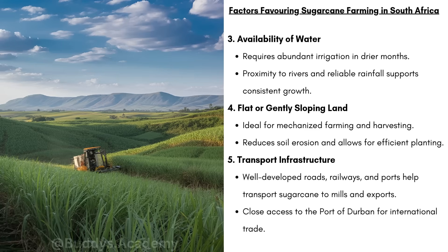We then have transport infrastructure. Well-developed roads, railways and ports help transport sugarcane to mills and for export. Sugarcane is very bulky and needs to be processed quickly, so good transport networks allow it to be sent to factories before it dries out. Another factor is close access to the Port of Durban for international trade. The Durban port is one of Africa's busiest ports, making it easy to export sugar to global markets.